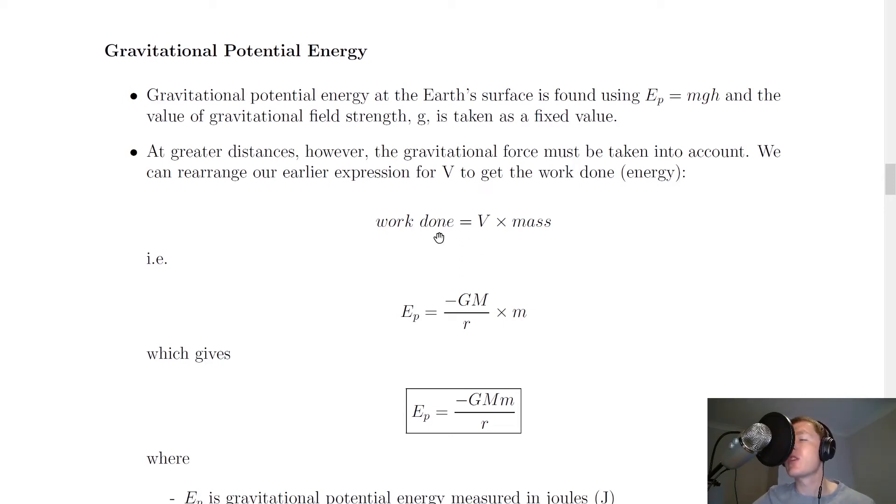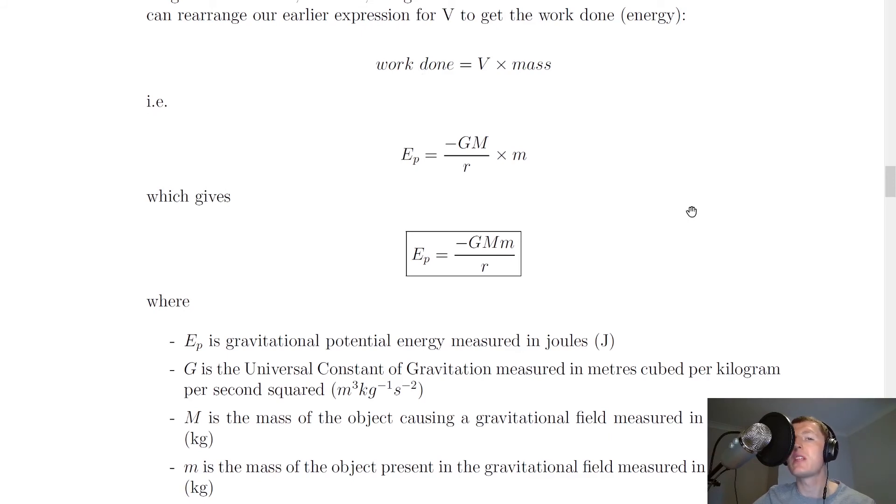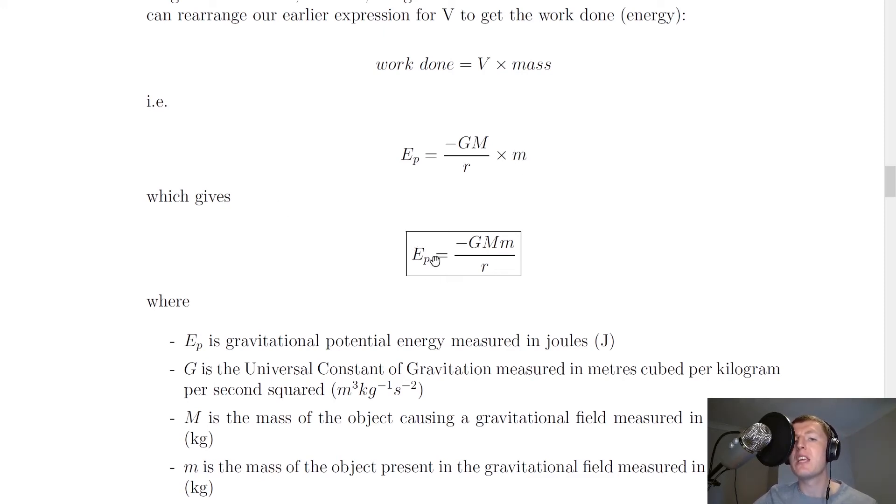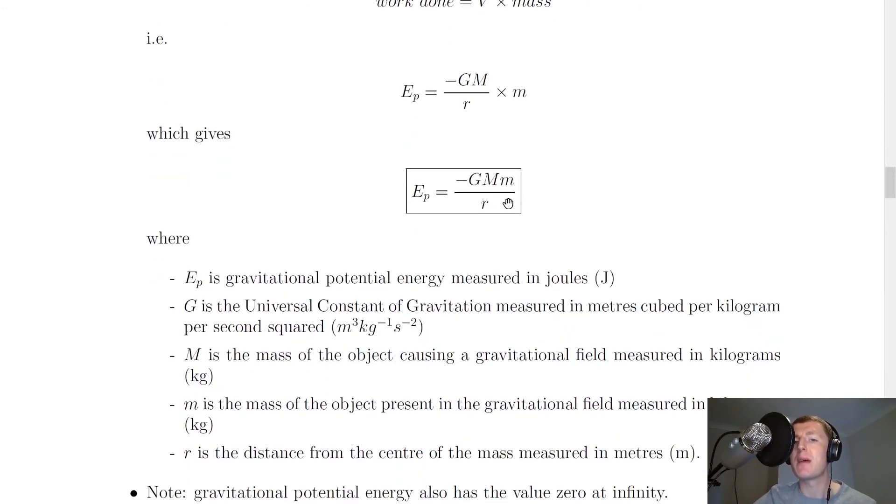So remember we said that V is equal to the work done divided by the mass. Well, if we rearrange for work done, we get V, our gravitational potential, times the mass. So we're now saying that the gravitational potential energy is our energy here, our work done, which is equal to minus Gm over R, remember that was our expression for gravitational potential, times by a mass M, which we can give the symbol of small m, which gives Ep equals minus Gm times M over R.